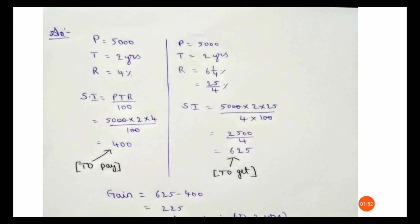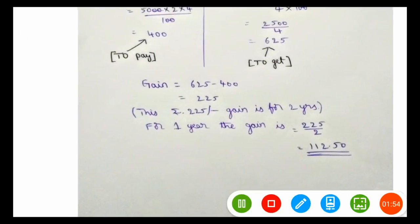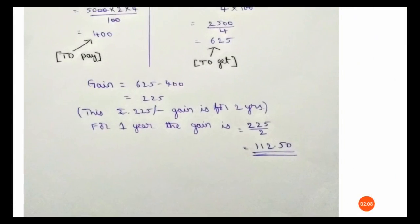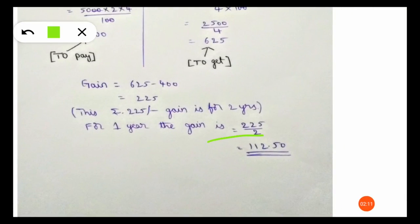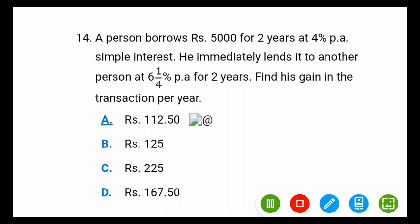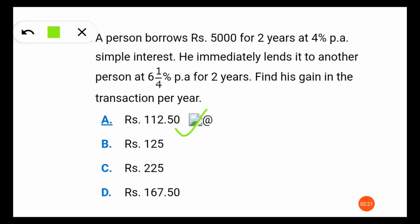Profit is 625 minus 400, which equals 225 rupees — but this is profit for two years. The question asks for profit per year, so for one year the gain is 225 divided by 2, which is 112.50 rupees. The answer is 112.50, so the answer is option A.